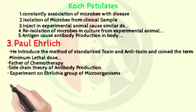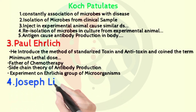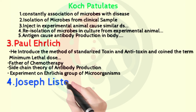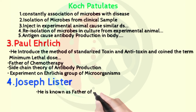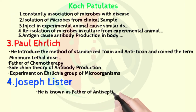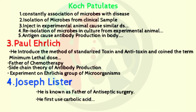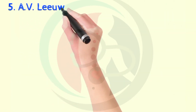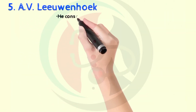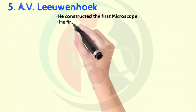The next scientist is Joseph Lister. He is known as the father of antiseptic surgery. He first used carbolic acid to sterilize surgical instruments and to clean wounds, thus making surgery more safer for the patient. Next is Antonio van Leeuwenhoek. He invented the first microscope using his own design. He was the first to see living microorganisms.